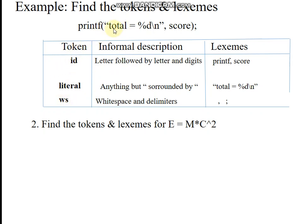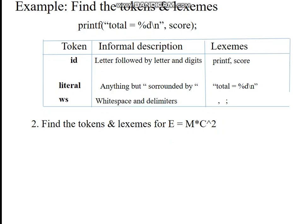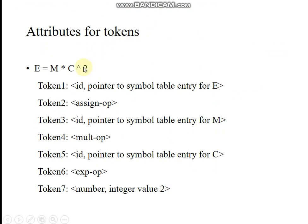Now find the tokens and lexemes for the statement: E = M * C squared. Token one: 'E' is a capital letter, so it is an identifier token — its value will be stored in the symbol table. The equal sign is an operator token, and operator tokens do not have a lexeme value.